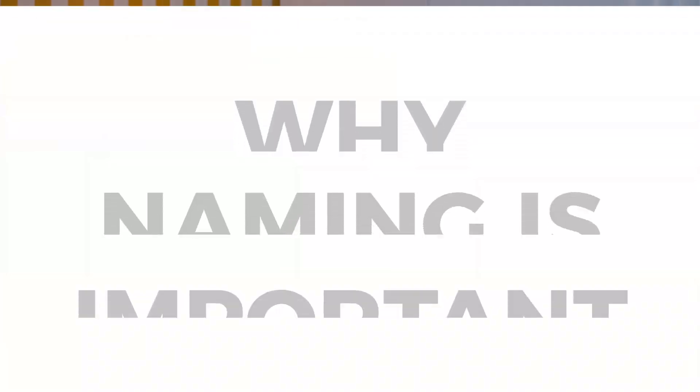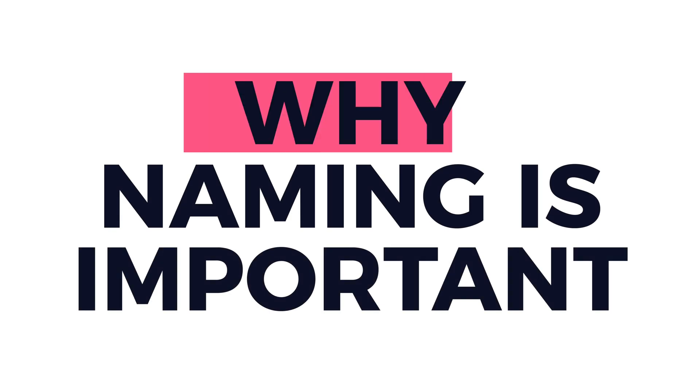Let's start with why naming is so important in coding. Names are everywhere — variables, functions, fields, classes, interfaces, files, database names, tables, columns, and many other things. Good names make your code readable, understandable, and more maintainable — not just for you but for your teammates and your future self. Poorly named elements lead to time wastage, bugs, and unmaintainability, causing a lot of confusion in your code.